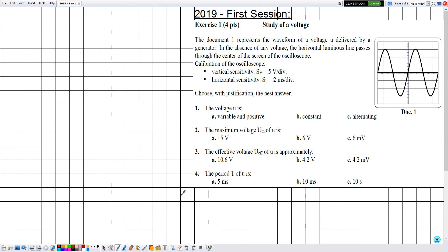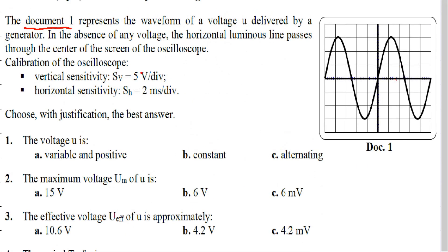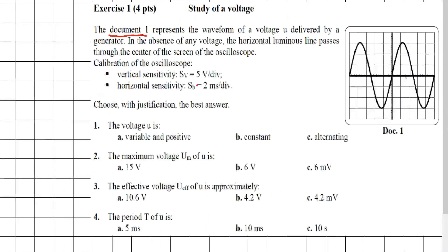Exercise number one, the title is study of a voltage. Document one represents the waveform of a voltage u delivered by a generator. In the absence of any voltage, the horizontal luminous line passes through the center of the screen of the oscilloscope.